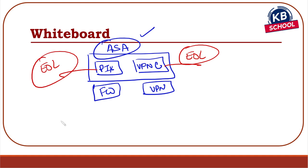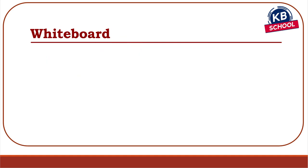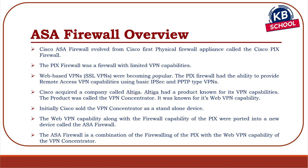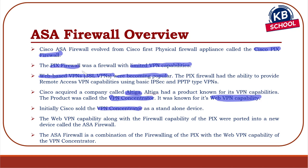In the early 2000s, Cisco combined the capabilities of both products into one device called the Adaptive Security Appliance — the ASA. Once the ASA became popular, the PIX and the VPN Concentrator were taken end-of-life. The ASA is essentially a combination of the firewalling capability from the PIX and the VPN capability from the VPN Concentrator.